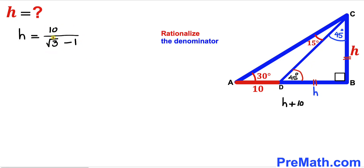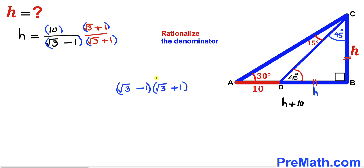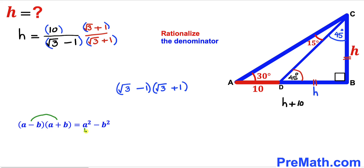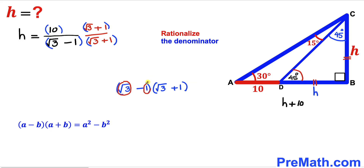Now we rationalize the denominator by multiplying and dividing by the conjugate of (square root of 3 minus 1), which is (square root of 3 plus 1). We multiply numerators together and denominators together. For the denominator, we apply the identity (a minus b)(a plus b) equals a squared minus b squared, where a is square root of 3 and b is 1.